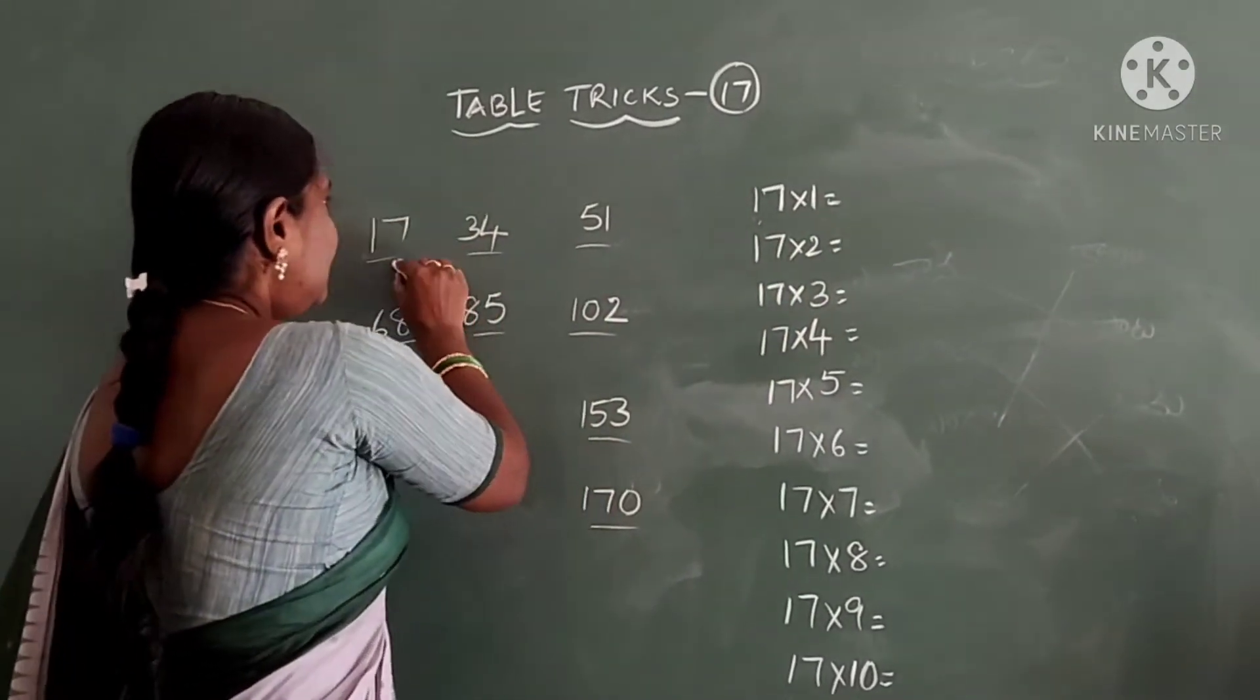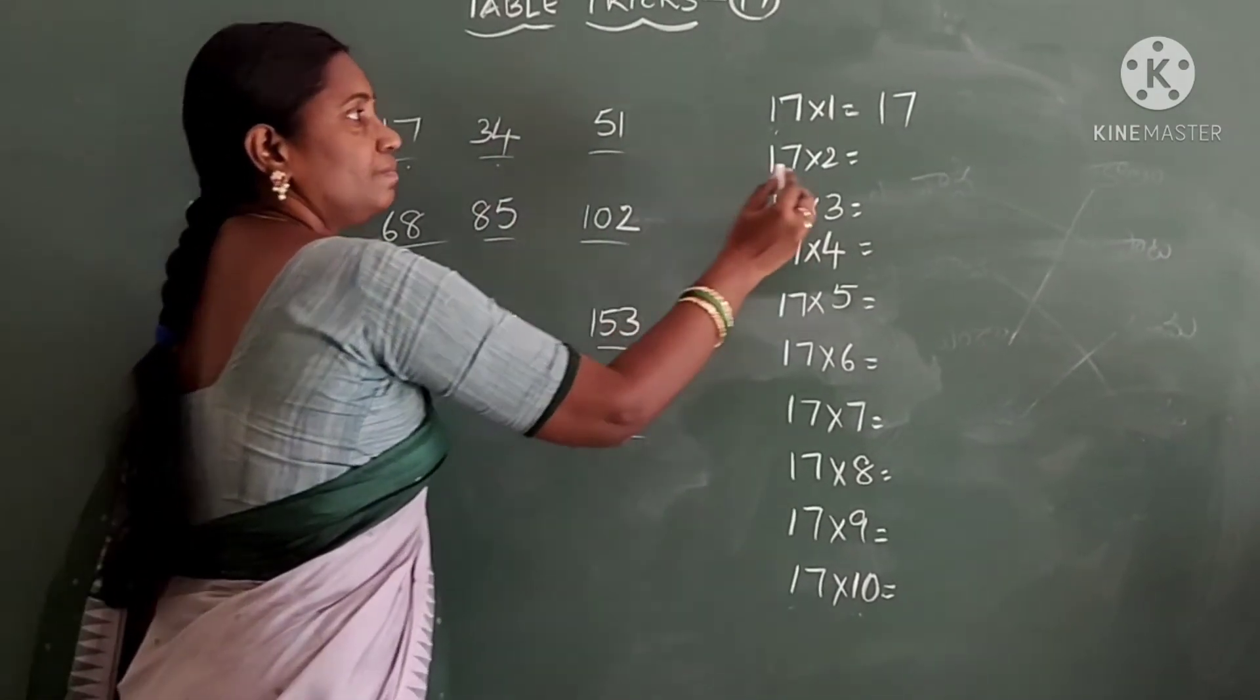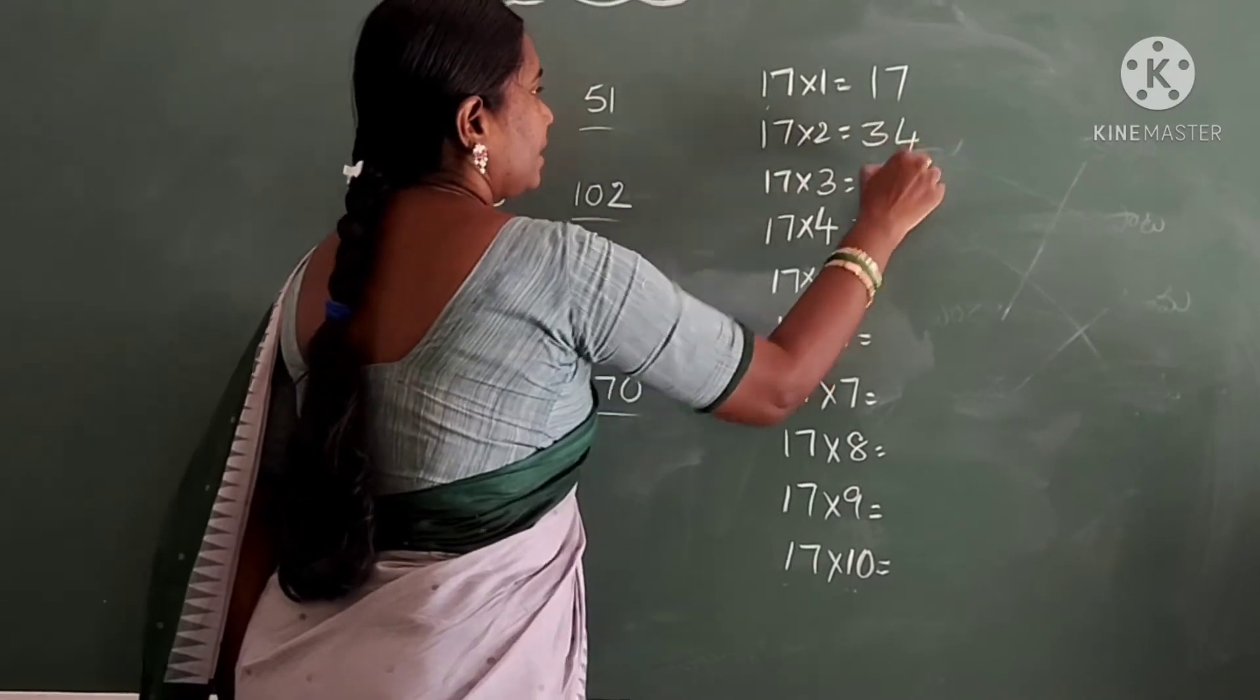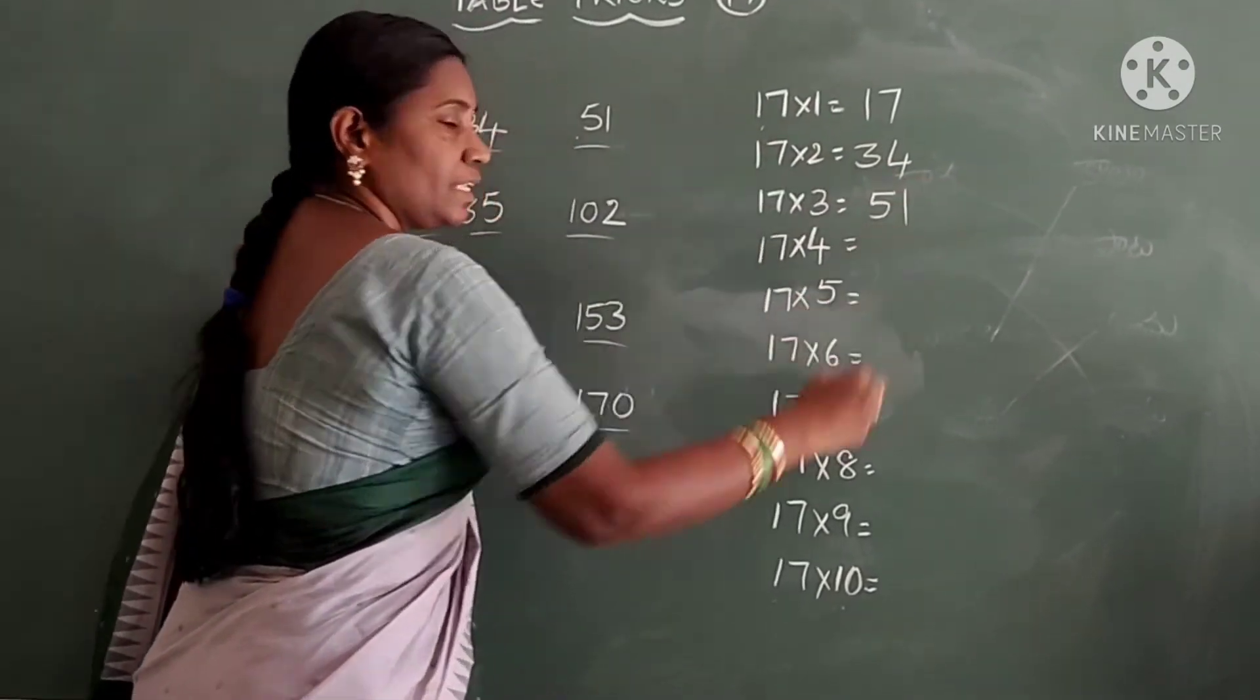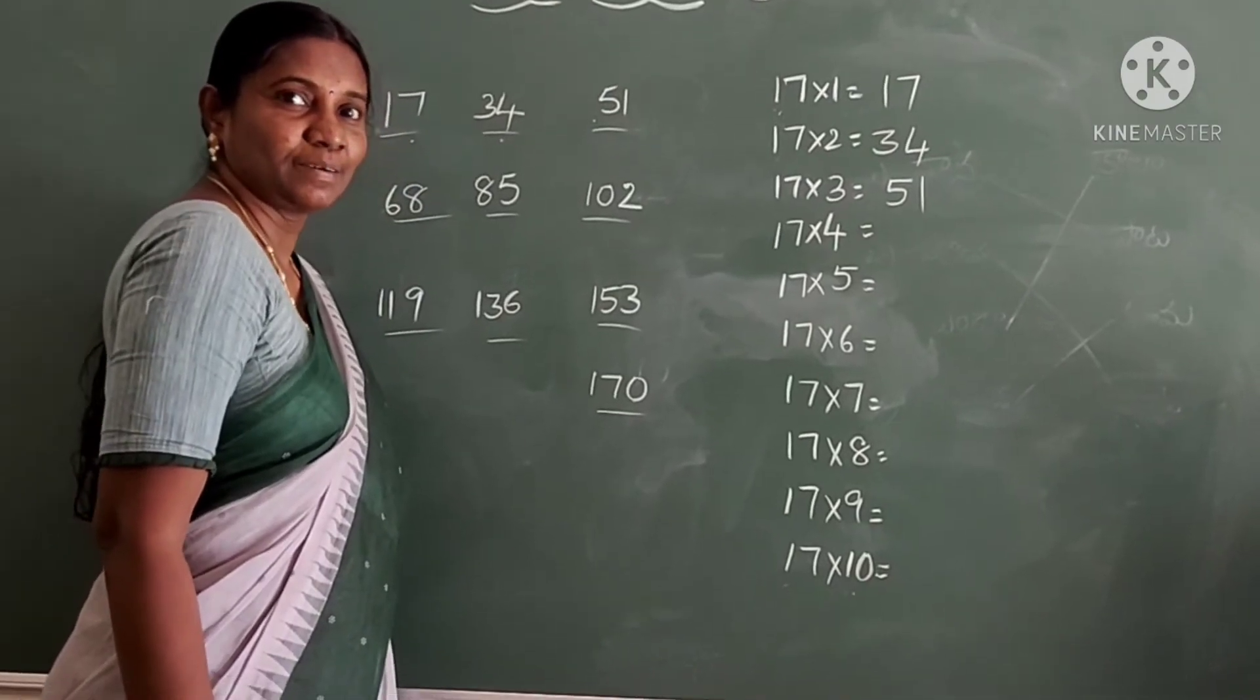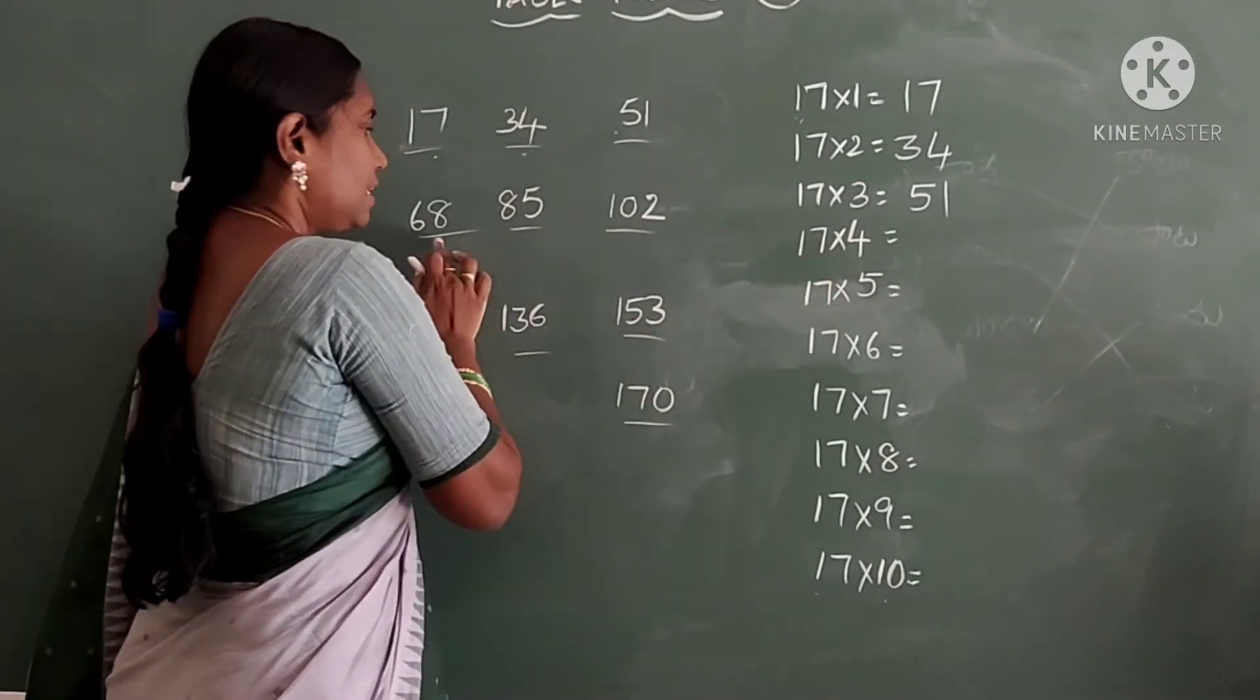17×1 is 17. 17×2 is 34. 17×3 is 51. Is it trick trick? Magic? Right? 17×4 is 68.